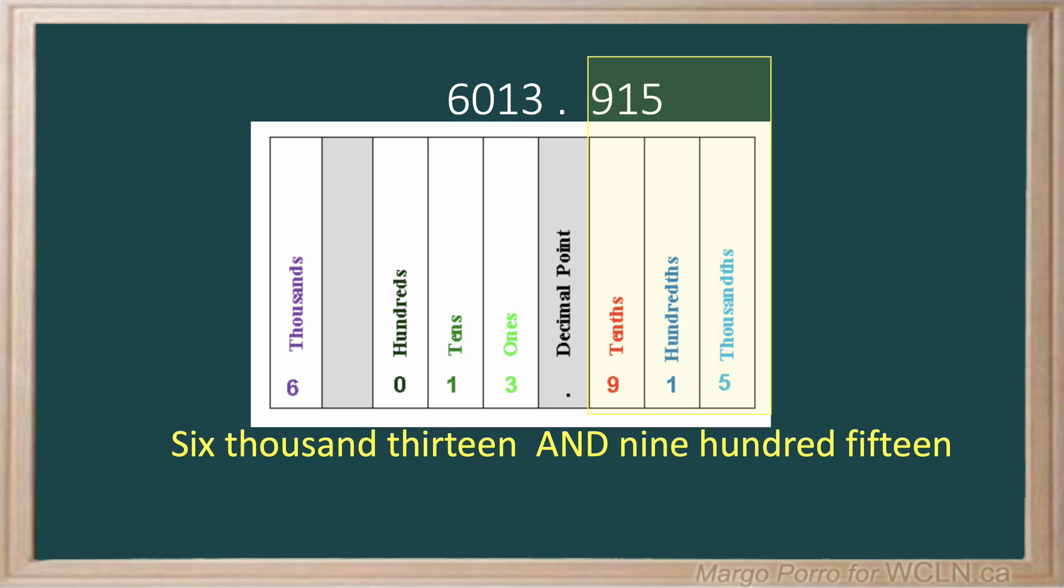Finally, we follow this by the place value of the last digit. The last digit five is in the thousandths place, so we say thousandths. Put it all together: six thousand thirteen and nine hundred fifteen thousandths.